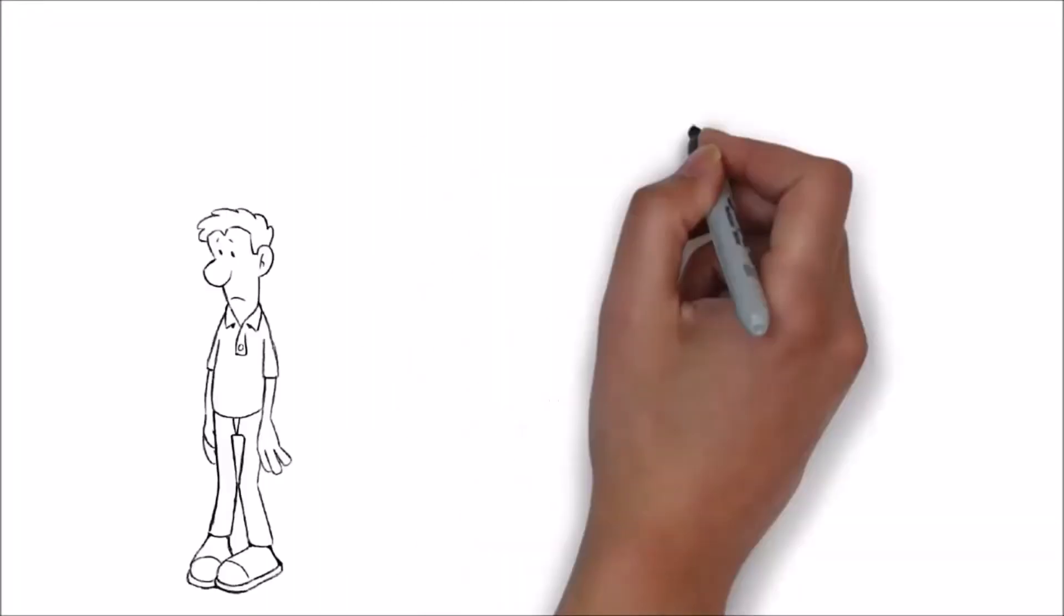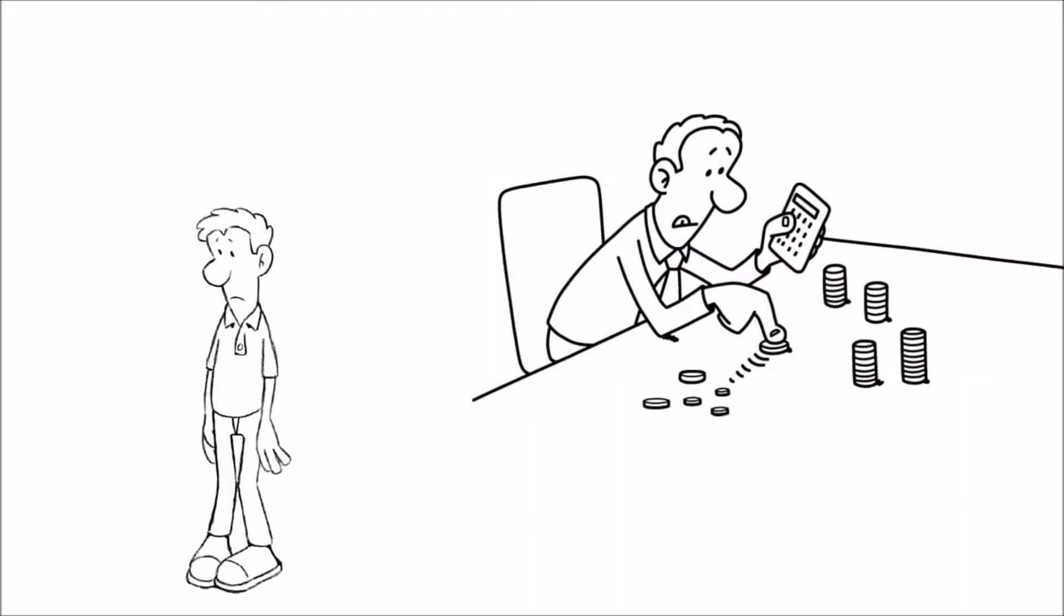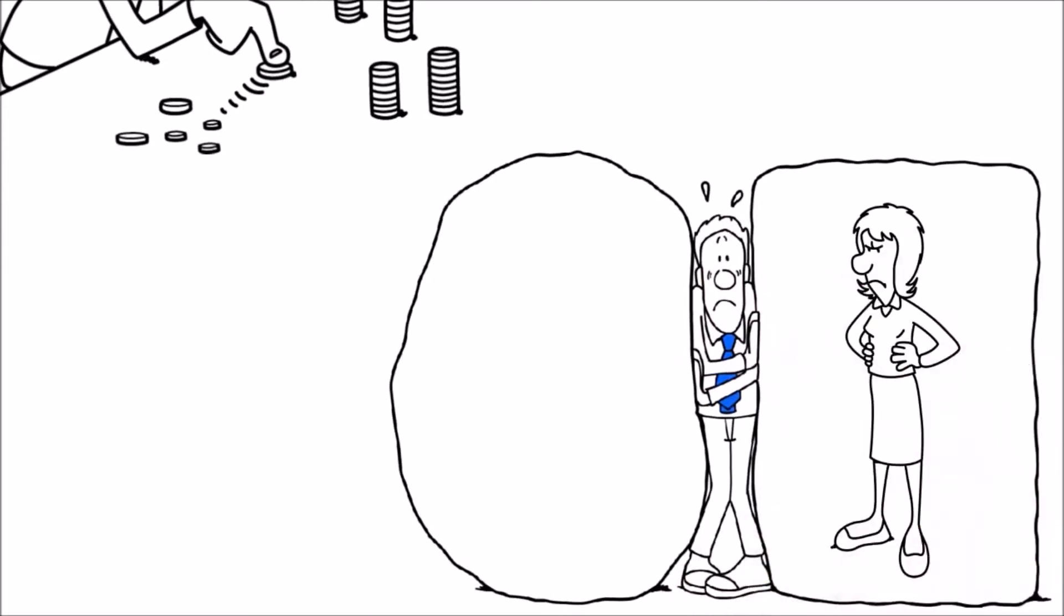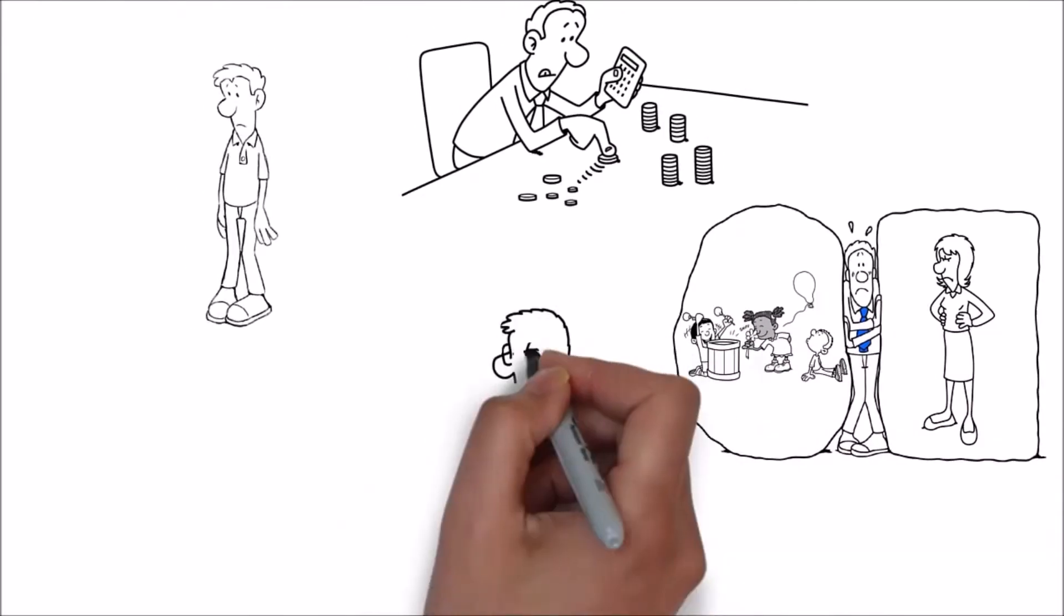Meet Steve. Steve is an ordinary guy that doesn't have any extra cash on hand. With the wife wanting some new earrings and the kids wanting karate lessons, what was Steve to do?